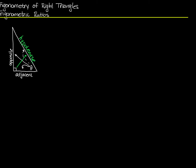You probably remember the hypotenuse from geometry. The hypotenuse is always the side opposite the right angle. Here's a different right triangle — if this is my right angle, then no matter which of these other two angles I'm going to call theta, this side will be called the hypotenuse, because it's opposite the right angle.